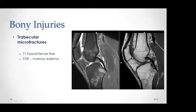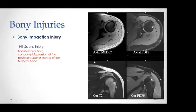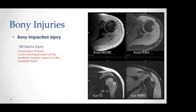Another pattern is trabecular microfractures, best detected on the T1 sequence as hypointense signal lines that appear edematous on fluid-sensitive sequences. Bony impaction injury is best exemplified by the Hill-Sachs lesion after anterior shoulder dislocation — a focal area of bony concavity involving the superolateral aspect of the humeral head. We measure the Hill-Sachs lesion in the anteroposterior dimension, craniocaudal dimension, and depth to determine whether it is engaging or non-engaging, as our orthopedic surgeons require this three-dimensional measurement.